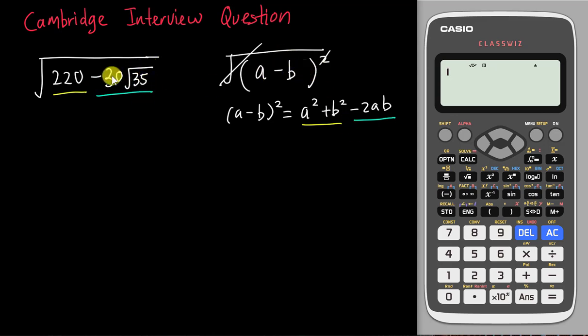If this is possible—because sometimes it's not possible to expand like this or the number becomes even more complicated—so if my assumption is correct, I assume -2ab equals -30√35. Then I divide -2 from both sides, so ab equals 15√35.